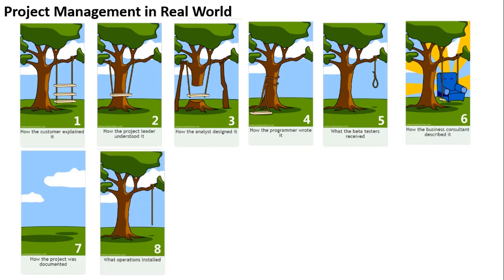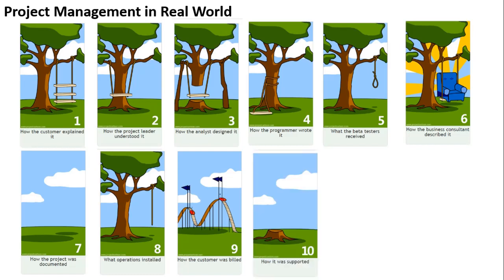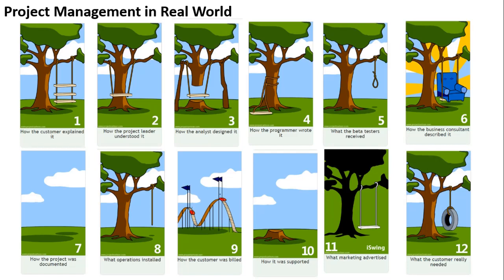What did operations install? Just a tree and a rope. And how the customer was billed — whatever the project is, the customer has to pay, and for a swing, they are paying for a roller coaster. Take that with a pinch of salt. As for support — there is no support; it's very difficult. And what is marketing advertising? They are promising the customer a premium, branded swing experience — very popular products with an 'i' name.